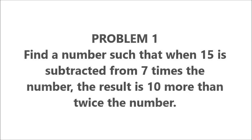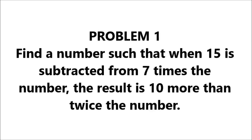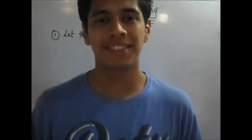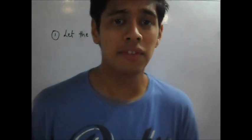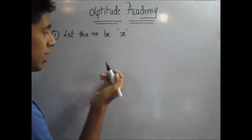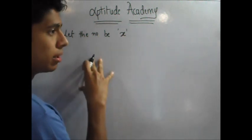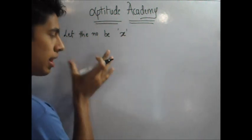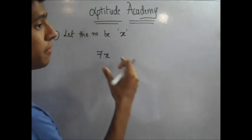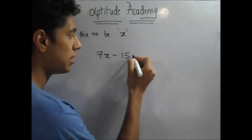Problem 1: Find a number such that when 15 is subtracted from 7 times the number, the result is 10 more than twice the number. So let's start off with an easy one. They've given you a statement about X. They've said that when 15 is subtracted from 7 times the number. So first write the left hand side. Now 7 times the number is 7X. When 15 is subtracted from it,